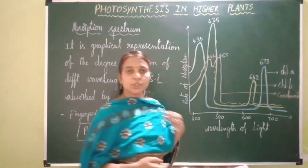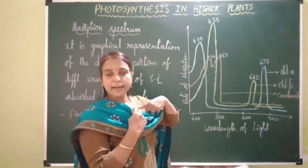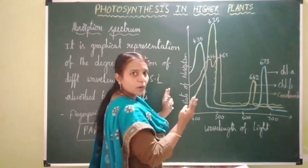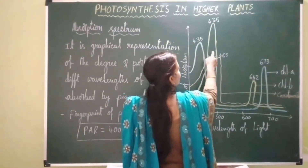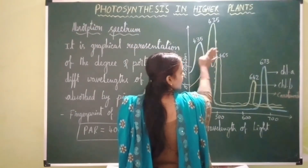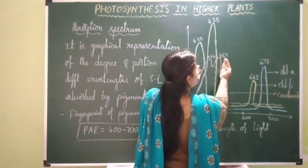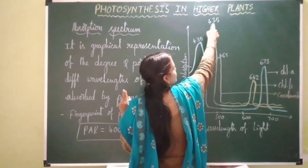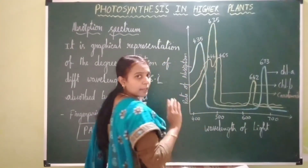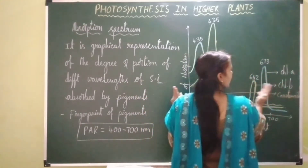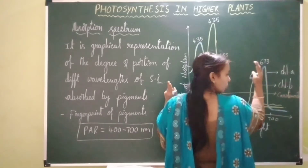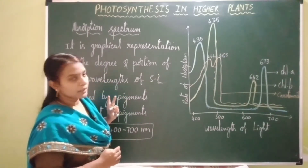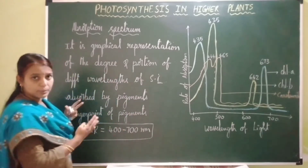Among all regions of sunlight, chlorophyll a and b show more absorption in the blue region and red region. Among blue and red, both chlorophyll a and b show more absorption in the blue region. In the blue region alone, chlorophyll b shows more absorption than chlorophyll a. In the red region alone, chlorophyll a shows more absorption than chlorophyll b. This is all about absorption spectrum. Now let's study action spectrum.